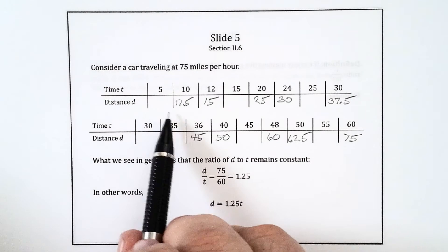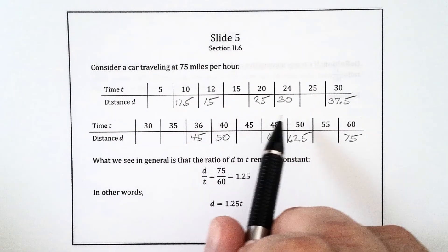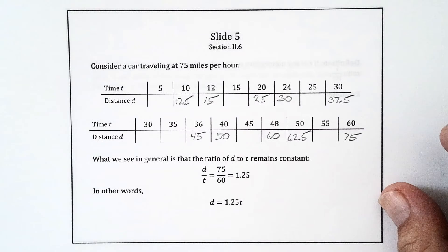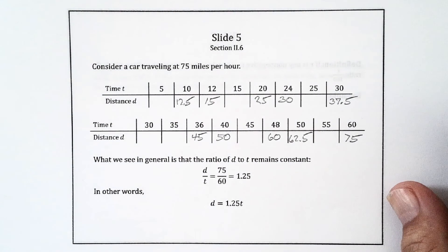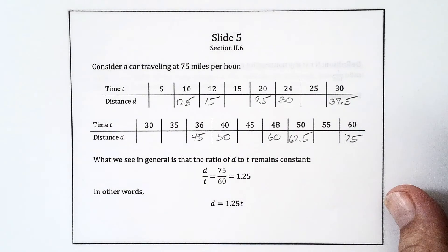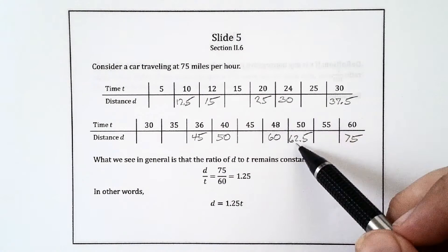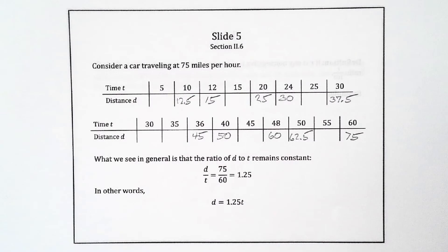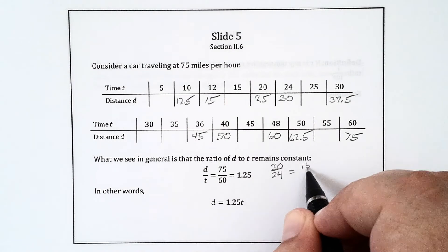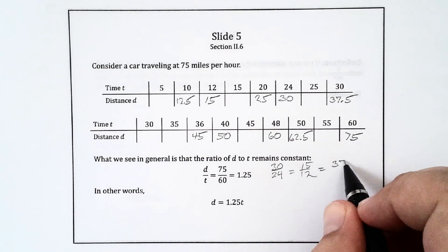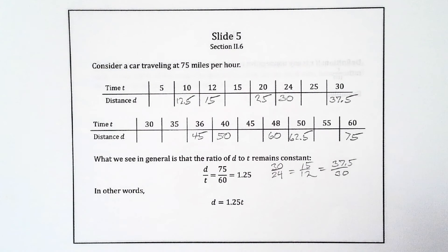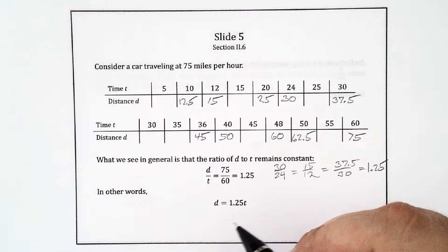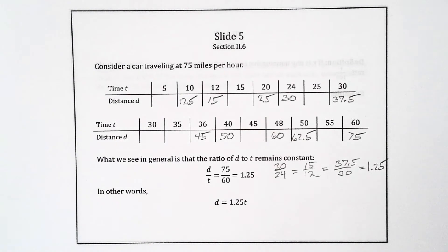We see in general that the ratio of d to t, distance to time, remains constant. So no matter which of these pairs I pick, 30 over 24, 15 over 12, 37.5 over 30, if I figure out that quotient, it's always going to be 1.25. So that ratio remains constant. Or in other words, the distance is always 1.25 times the time. So this is a special relationship between these two variable quantities, d and t.